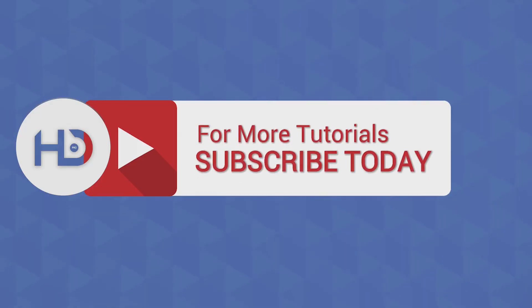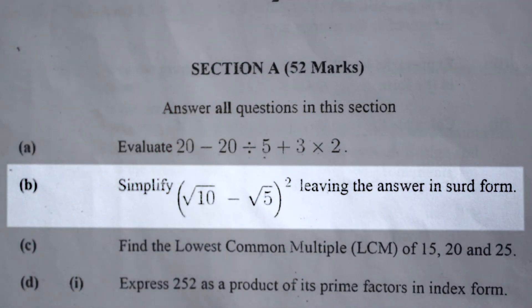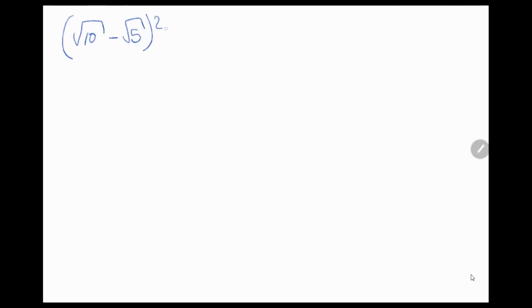Question number 1B. Simplify square root of 10 minus square root of 5 squared, leaving the answer in surd form. To simplify square root of 10 minus square root of 5 squared, the first thing we do is we expand the square.